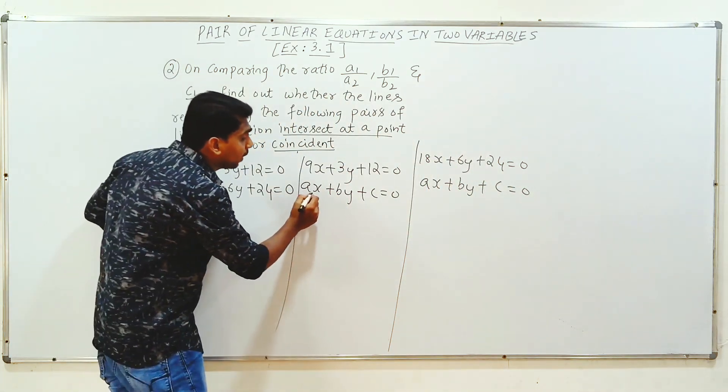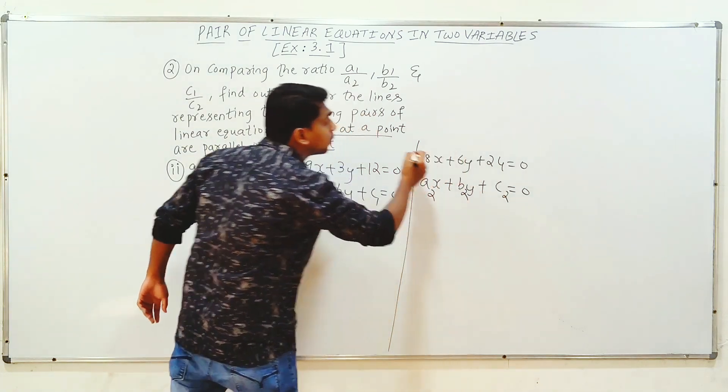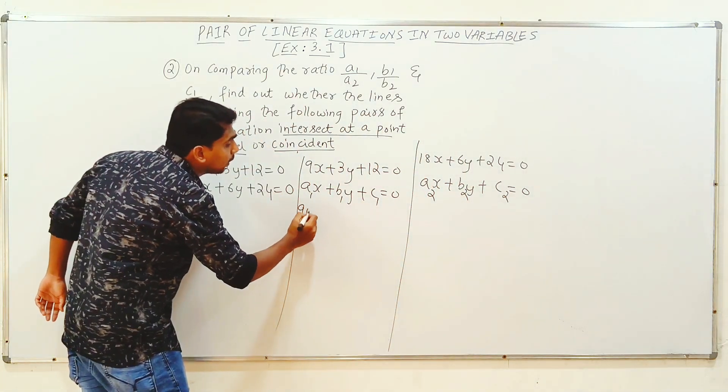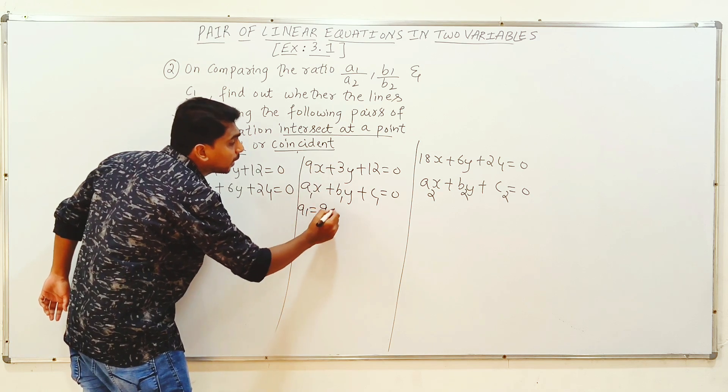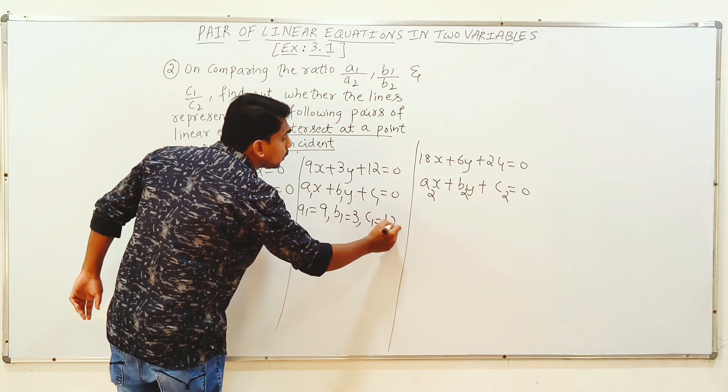I am going to say A1, B1, C1. This equation number 1. Here we have A1 value, A1 value 9. B1 value, value 3. C1 value, value 12.